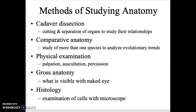There are a few different methods to study anatomy. A very common initial type is called cadaver dissection — people donate their bodies and we're able to open them to look at the relationship between structure and function. Comparative anatomy compares different species to see evolutionarily what's going on. Physical examination is touching, listening, and feeling to see what is happening. Gross anatomy is what's available to see with your eyes, and histology is what you can see with a microscope.